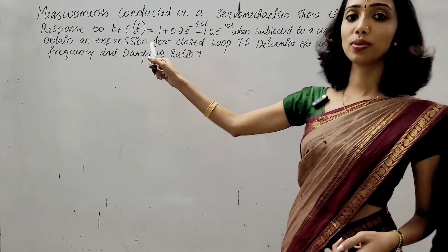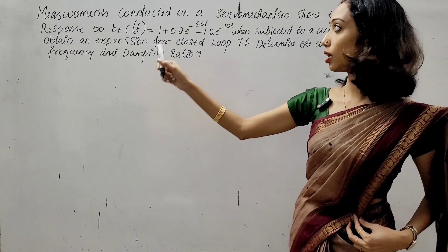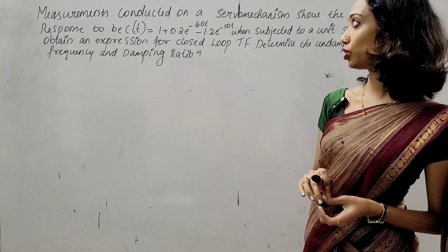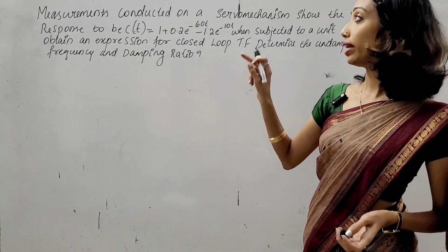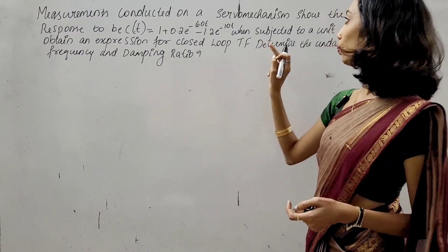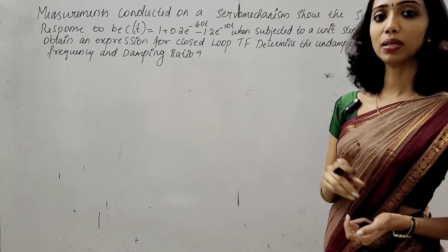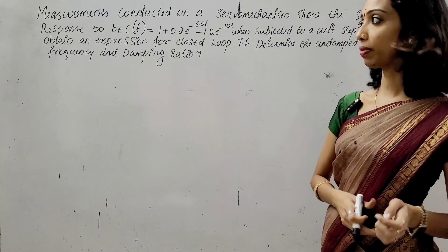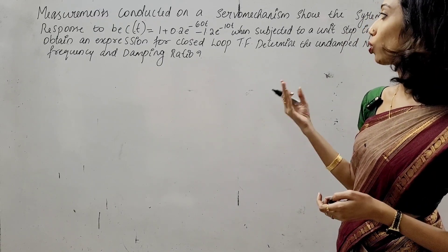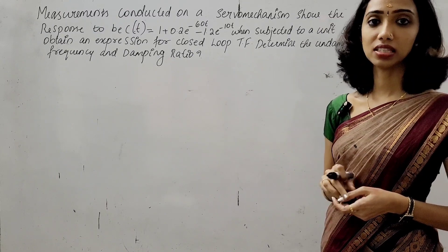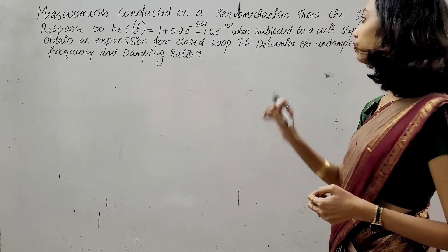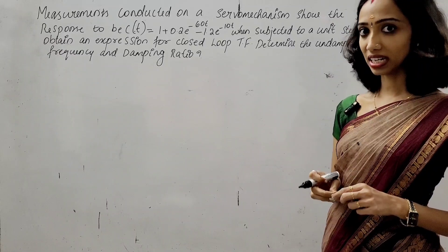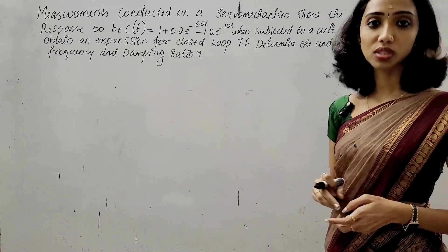The system response is given as C(t) = 1 + 0.2e^(−60t) − 1.2e^(−10t), when subjected to a unit step input R(s) = 1/S. Obtain an expression for the closed-loop transfer function C(s)/R(s), then determine the undamped natural frequency omega_n and the damping ratio zeta.